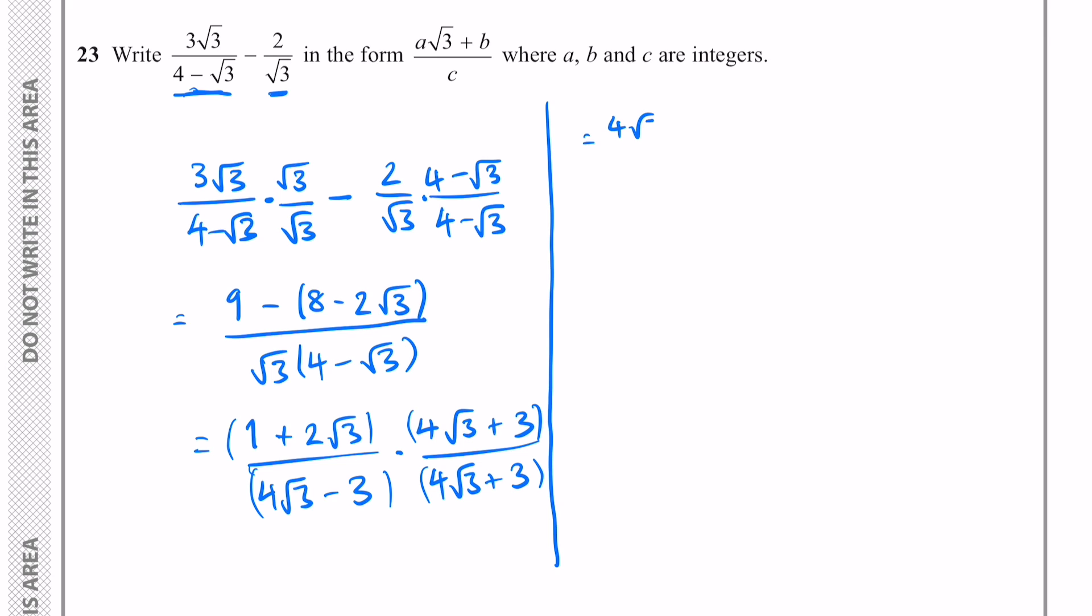Okay so multiplying the first terms we get 4√3. The outer terms plus 3. The inner terms, that's plus 8 multiplied by √3 times √3 which is just 3. And the last terms, that's plus 6√3.